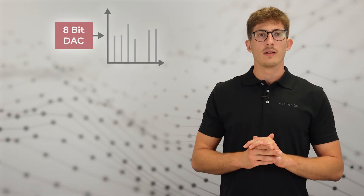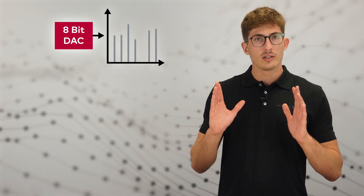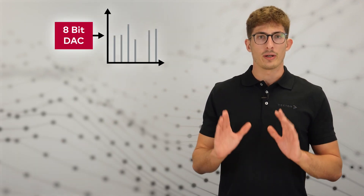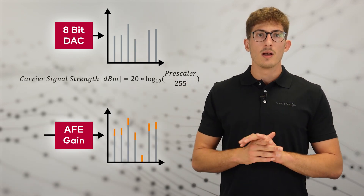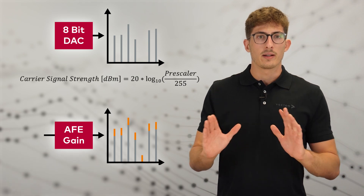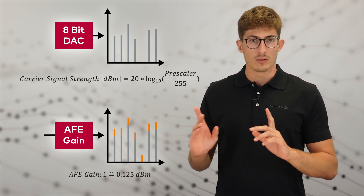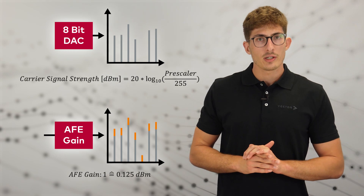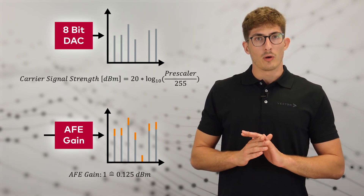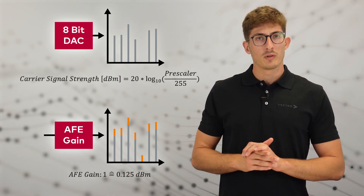After importing the measurement data into the Green File Configurator, we can now start creating a new configuration. The transmitting power consists of two parts. The first one is the prescalar value, which determines the individual transmitting power of a carrier according to the shown formula. The second one, the RFE gain, boosts or attenuates the entire signal on all frequencies by a set value. To get a good signal-to-noise ratio, keep the RFE gain as low as possible because background noise will be boosted by it as well.